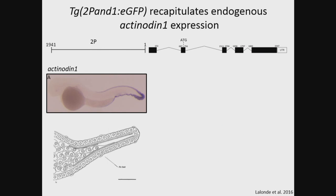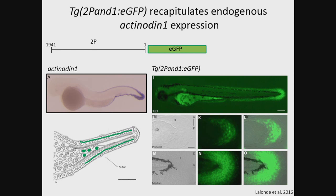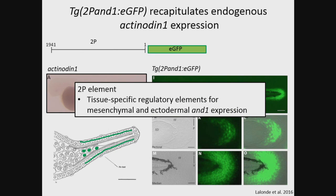To identify the regulatory elements, we cloned a 2kb region upstream of the first non-coding exon, and we called this region 2p. We cloned a GFP reporter gene and created a transgenic reporter line, 2p-N1-eGFP. Reporter expression is able to recapitulate endogenous expression in the median as well as the pectoral fin—specifically in the overlying ectoderm and the mesenchyme of the fin fold. This tells us that within our 2p element are the tissue-specific regulatory elements, or enhancers, for mesenchymal and ectodermal AN1 expression.